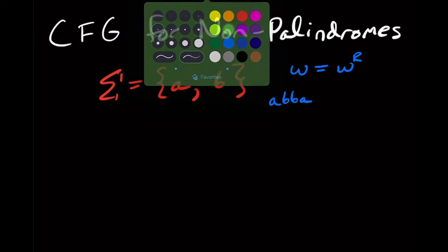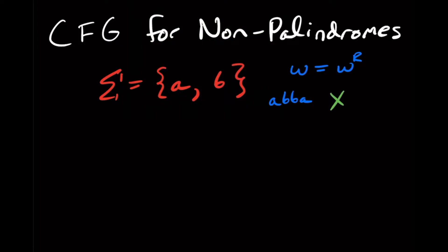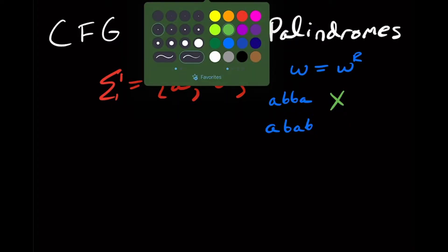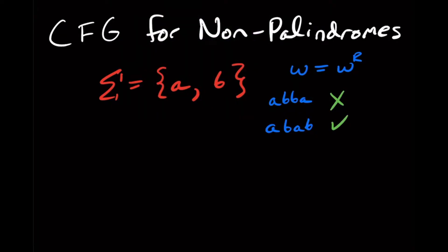So in this case, we would not accept that string. But if we looked at the string ABAB, for example, then if we flip the string around, that would be BABA, and so therefore we should be able to accept that string.